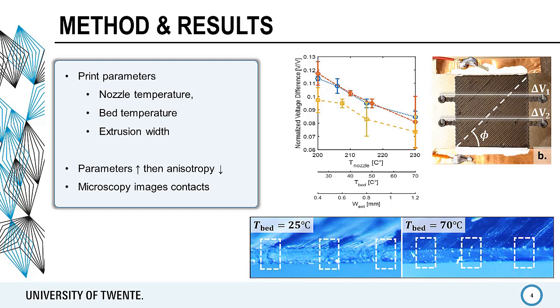This showed that the anisotropy, and hence contact resistance, decrease with increasing bed and nozzle temperature and increase with extrusion width. This was confirmed by microscopy of the cross sections of the samples, showing a difference in the contact quality for these different parameters.